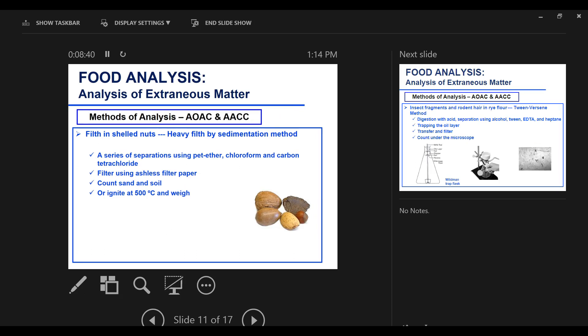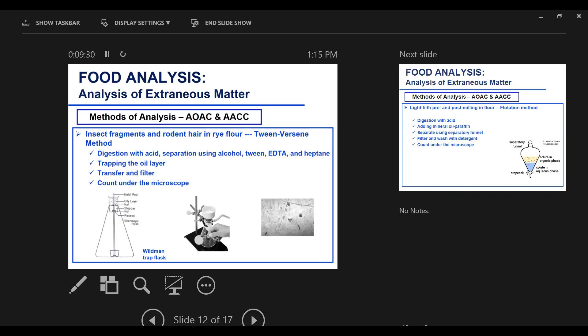You would take a certain known amount of sample, 50 grams or 100 grams, and run it through a sieve, and you would then determine how many parts per certain amount of sample are found. For heavy silt inside nuts, whether it is excreta or soil or pebbles, you don't want the nuts to sediment. So you need chloroform and carbon tetrachloride to make the nuts float, whereas your heavy silt will be settling, and they separate them that way. You can filter out and again put the filter paper under the microscope, or ignite at 500 degrees Celsius to determine the amount of silt that is present relative to the amount of nuts.